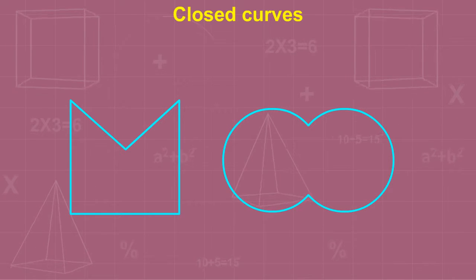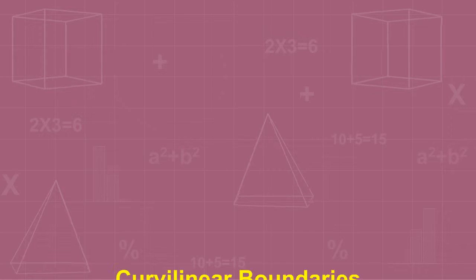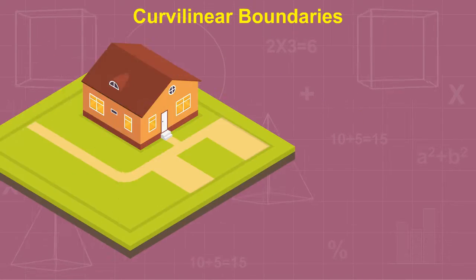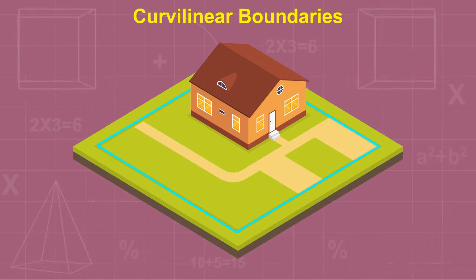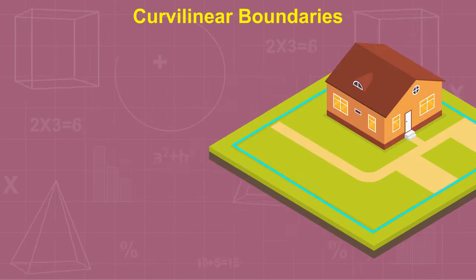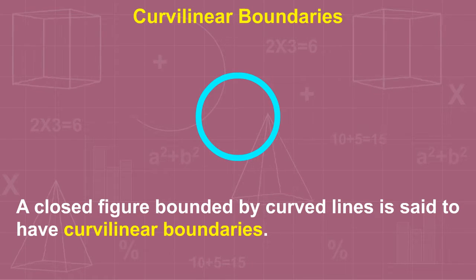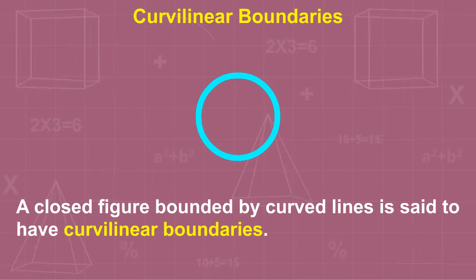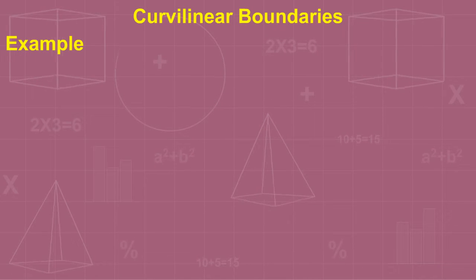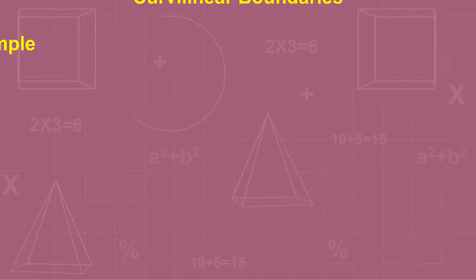The curves which do not cross themselves are called simple closed curves. These two figures are examples of closed curves. A line which marks the limits of an area is known as a boundary. A closed figure bounded by curved lines is said to have curvilinear boundaries. For example, two points on a globe.